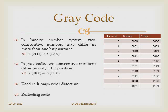Now let us explain gray code. A drawback of binary is that two consecutive numbers may differ in more than one bit position. For example, 7 is represented as 0111 and 8 as 1000 — these differ in all 4 bit positions. That means incrementing a number by 1 may require flipping more than one bit, which is time-consuming. In gray code, every consecutive number differs by only one bit position. For example, 7 is 0100 and 8 is 1100 — differing in only one bit. This is why gray code is used in Karnaugh maps and error detection.